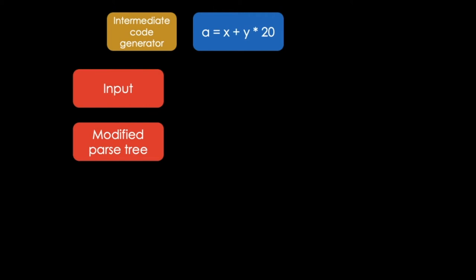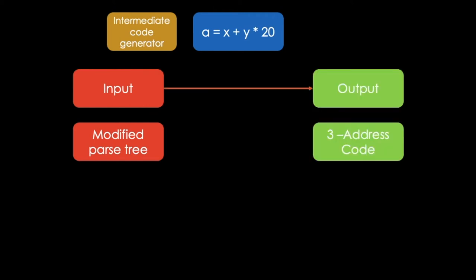Next, the intermediate code generator comes into play. Our modified parse tree will serve as an input here. It is converted into intermediate code. In most cases, this will be three-address code, also called TAC. So simply put, it separates our expression into different subsets of the expression, as displayed here.